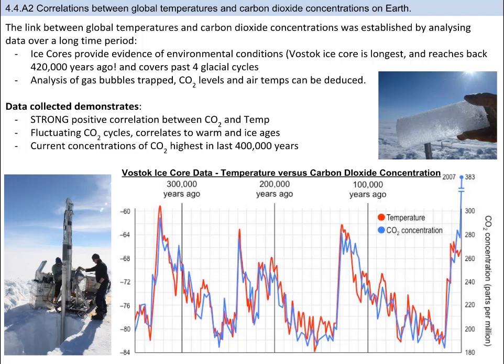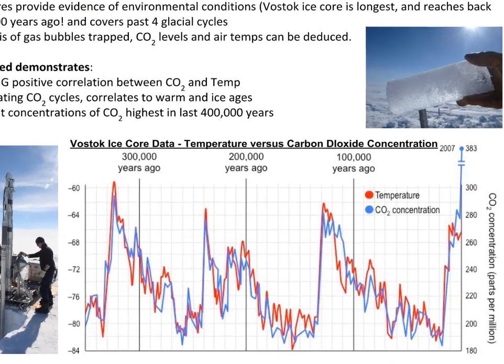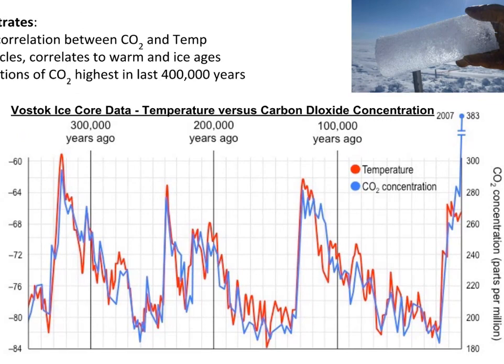The link between global temperatures and carbon dioxide concentrations was established by analyzing data over a long time period, specifically using ice cores. Ice cores, taken from the Vostok station in Antarctica, provide evidence of the environmental conditions at the time of freezing. The Vostok ice core is one of the longest drilled, reaching back 420,000 years and covering the past four glacial cycles. By analyzing the gas bubbles trapped in ice, historical CO2 levels and air temperatures via oxygen isotopes can be deduced. It's a very reliable source of long-term data, and you can see the drilling machine and what the ice looks like with air bubbles trapped.